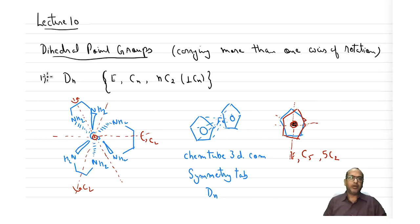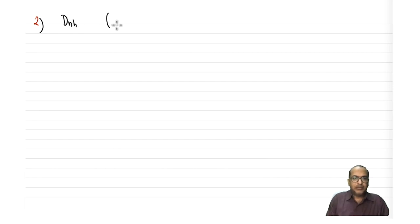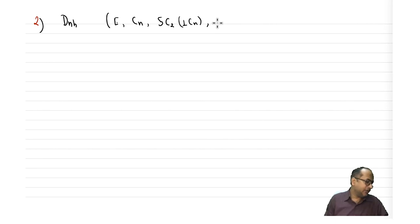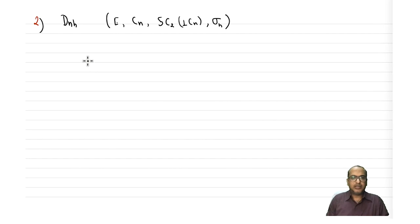This is one of the dihedral point groups. Now let's look at the second dihedral point group: Dnh. As the name suggests it will have E, Cn, n C2s perpendicular to Cn, and in addition a σh. In the previous Dn case there was no σh.